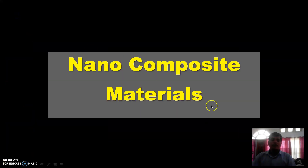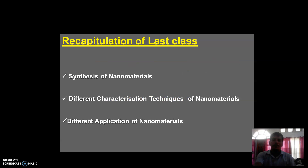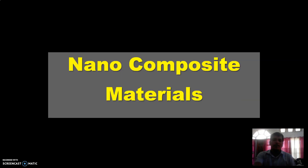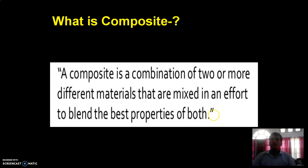In today's class we are going to discuss about nanocomposite materials. First of all, what is a composite? A composite is a combination of two or more different materials that are mixed in an effort to blend the best properties of both.